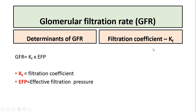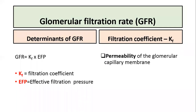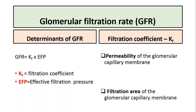The filtration coefficient has two components. The first factor is the permeability of the glomerular capillary membrane — that is, the permeability of the interface between the glomerular capillary and Bowman's capsule. The second factor is the filtration area, or the surface area of the glomerular capillary membrane. So the filtration coefficient is the product of permeability and filtration area.